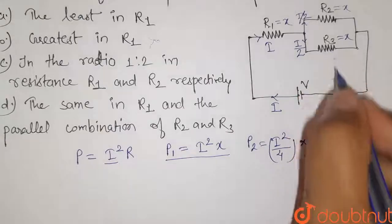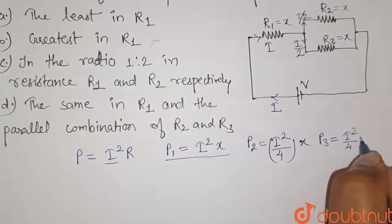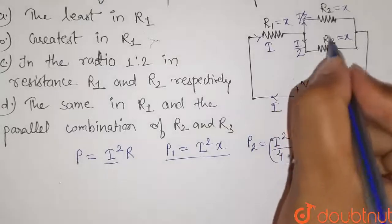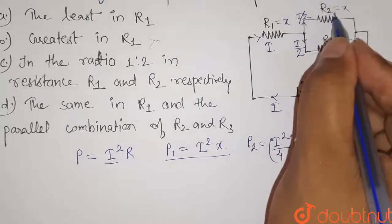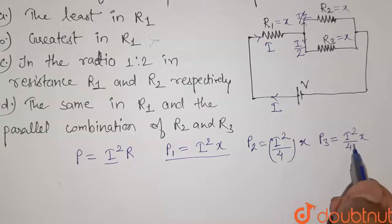Now power dissipated in R3 will also be equals to I squared by 4 into X, because the current flowing in these two resistors is same. That is why power dissipated is also same.